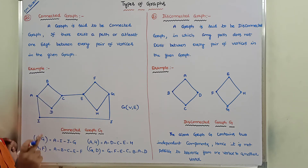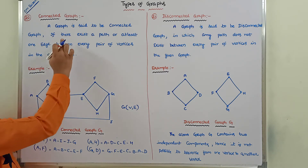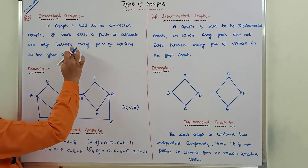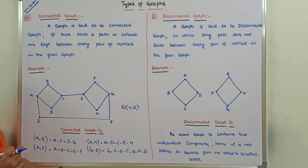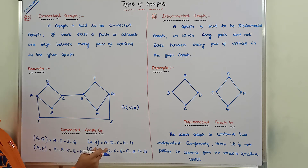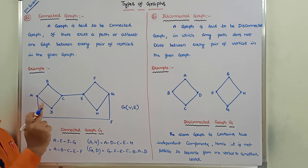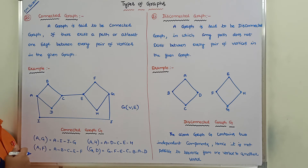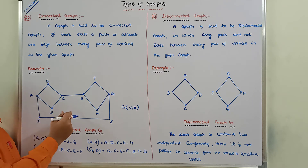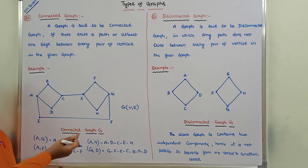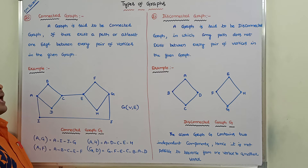Now we can go for the definition. A graph is said to be a connected graph if there exists a path, or at least one edge, between every pair of vertices in the given graph. We can take any pair of vertices — that pair of vertices are connected by using a path or at least one edge. That type of graph is called a connected graph.